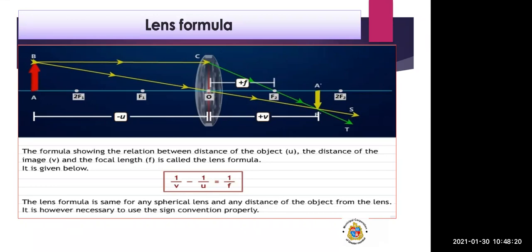F is the focal length. These three parameters — U, V, and F — are used in the lens formula, which shows the relationship between the distance of the object, the distance of the image, and the focal length. The formula is: 1/V minus 1/U equals 1/F. This is the lens formula and it is the same for any spherical lens.